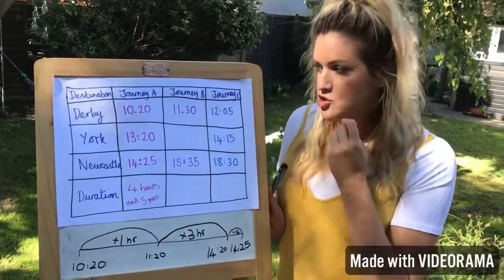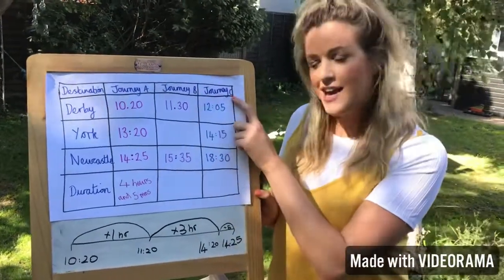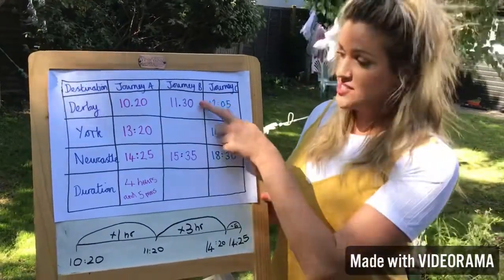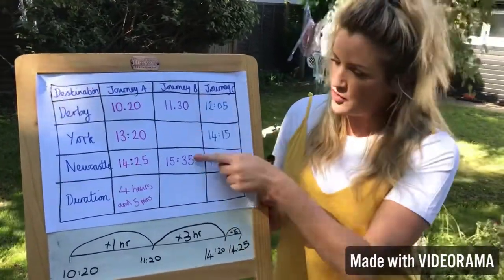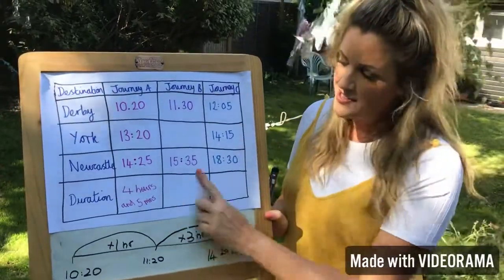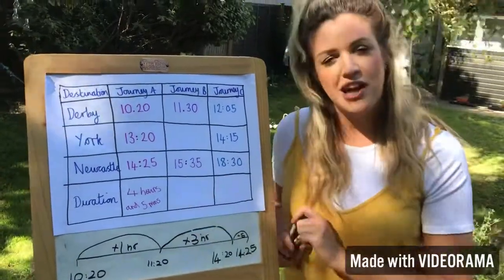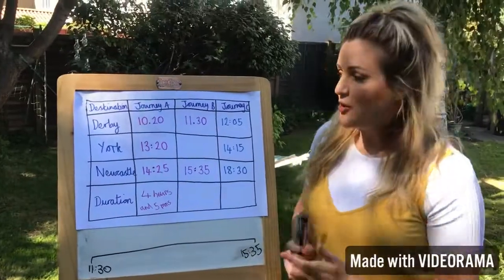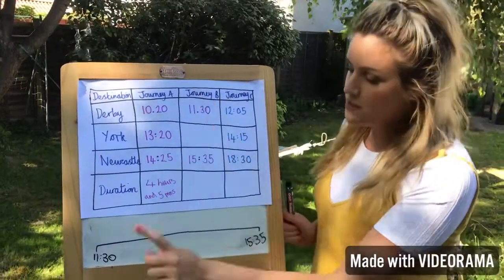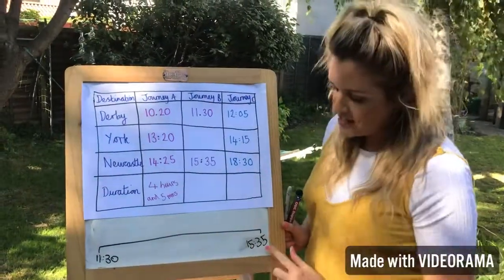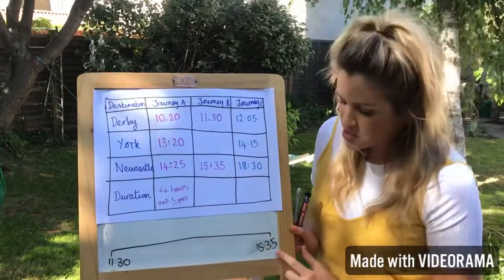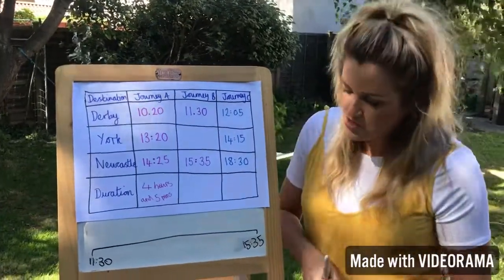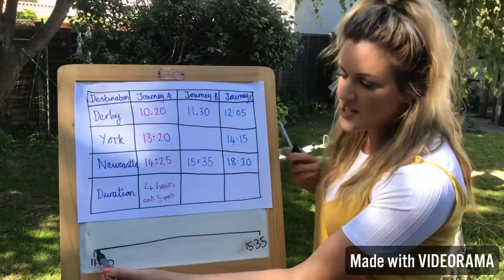Perhaps you can pause the video now and work out the duration of Journey B and Journey C. Remember, you only need the start time and the end time — you've got those. Have a go! So Journey B starts at 11:30 and arrives in Newcastle at 3:35 in the afternoon.